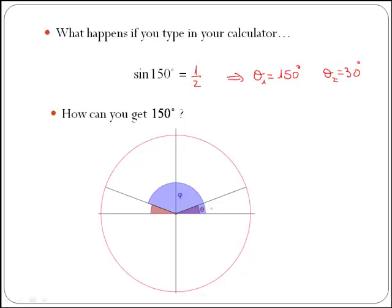If we consider theta, this angle here, to be 30, and then phi here to be 150, can you see any relationship between theta and phi? So you could actually obtain phi just by knowing theta.